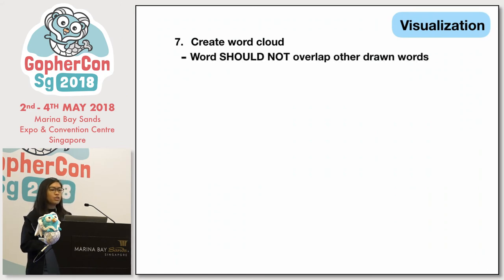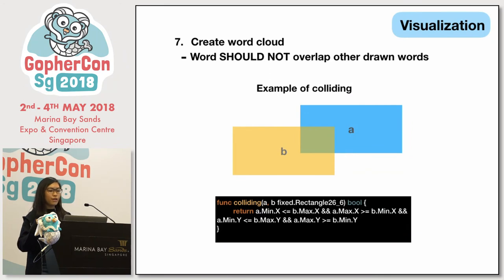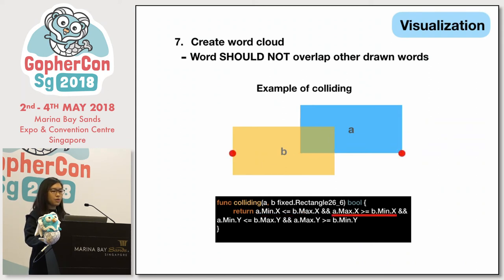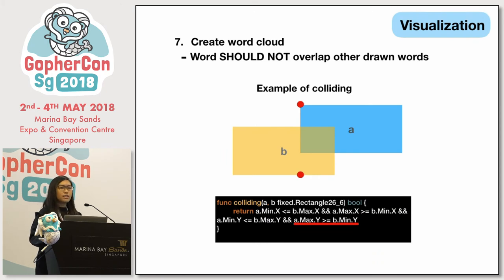I also had to ensure words don't overlap other drawn words. Here's an example of colliding words. If words are colliding, the following conditions are met: a_mean_x ≤ b_max_x, a_max_x ≥ b_min_x, a_mean_y ≤ b_max_y, and a_max_y ≥ b_min_y. With all these conditions met, it means two words are indeed colliding — and this is not what we want in the word cloud output.